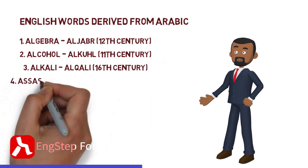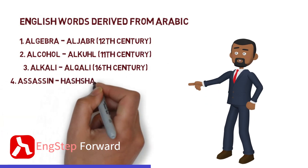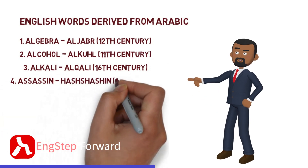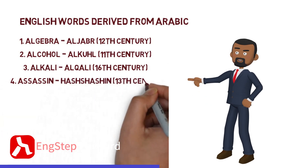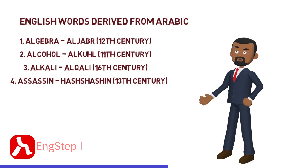Number 4: Assassin. Assassin became part of English in the 13th century. It is derived from Hashashin.